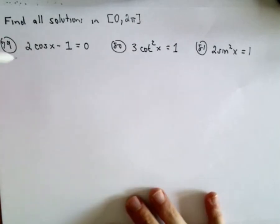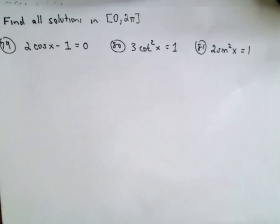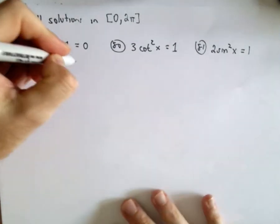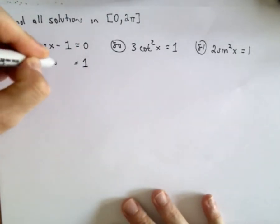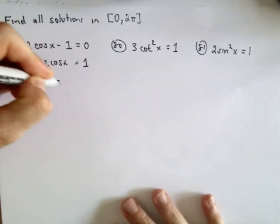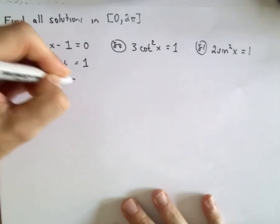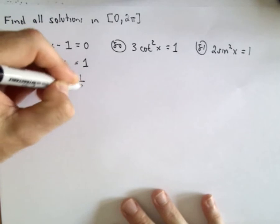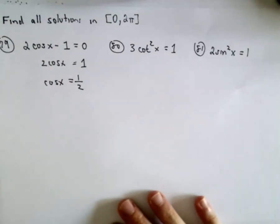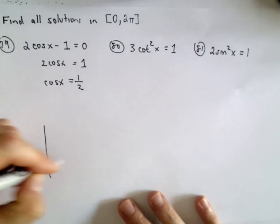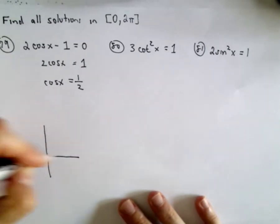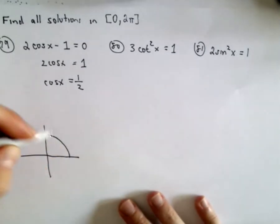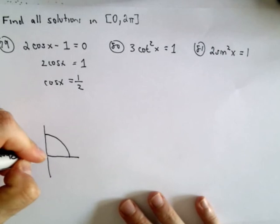For number 79, I'm going to start off by adding 1 to both sides, and then divide both sides by 2. So I'm trying to determine where cosine x equals 1 half. This is where knowing the unit circle is helpful.